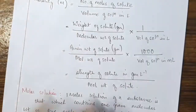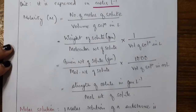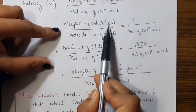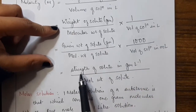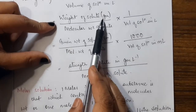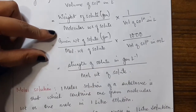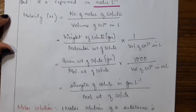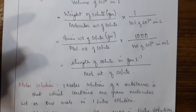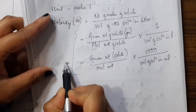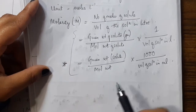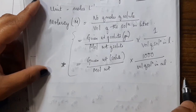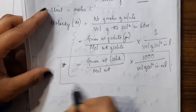Since volume is often given in milliliters in calculations, the formula becomes: M = (given weight / molecular weight) × 1000 / volume of solution in mL. This is the important formula to remember and use for calculations. Molarity is the number of moles of solute per liter of solution.